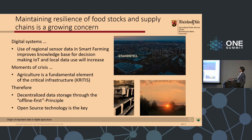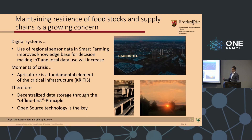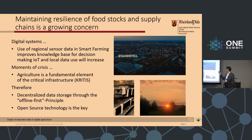Maintaining resilience of food stocks and supply chains is a growing concern. Digital systems and use of regional sensor data in smart farming improve the knowledge base for decision making. IoT and local data use will increase in the next years. But in a moment of crisis, agriculture is a fundamental element of critical infrastructure. Therefore, we say that decentralized data storage through the offline-first principle is what we want for the future. Open source technology is the key for that.